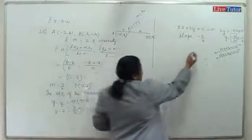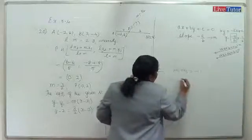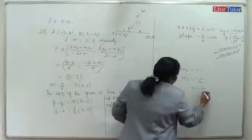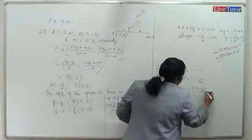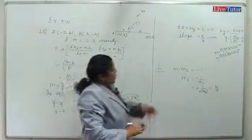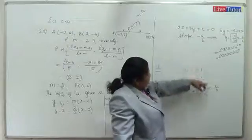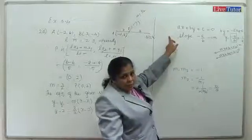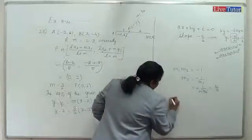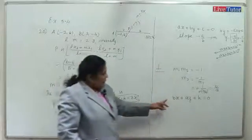If m1 × m2 equals -1 and m1 is -a/b, then m2 equals b/a. The perpendicular line has the form -bx plus ay plus k equals 0, where a and b coefficients are interchanged and one sign changes.